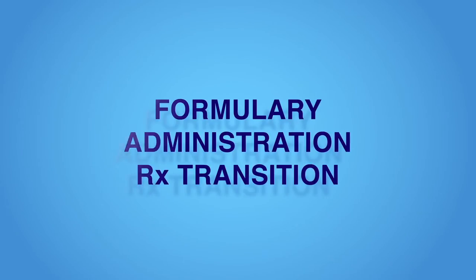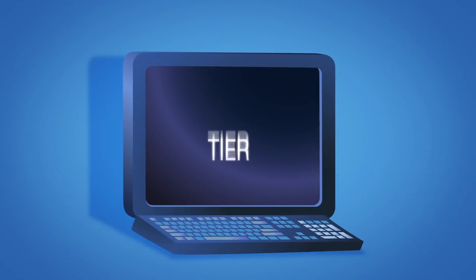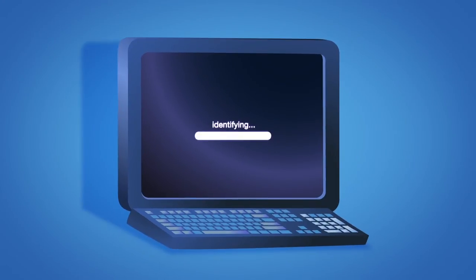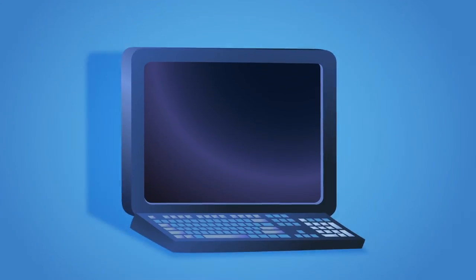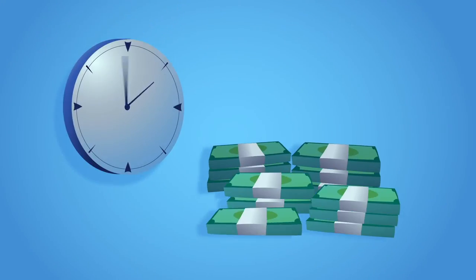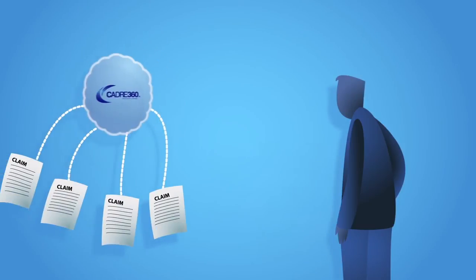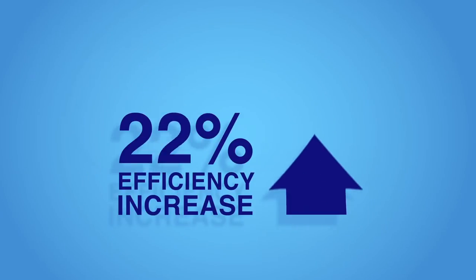The CADRE 360 Formulary Administration Rx Transition module compares every claim with the approved formulary drug index, tier, quantity limits, prior authorization, and step therapy. It systematically identifies both paid and rejected outlier claims that are inconsistent with CMS rules. This module makes the review process efficient and saves valuable resources by documenting pharmacy department actions and creating links to each affected claim for easy retrieval during an audit. Clients using this module report efficiency improvements of over 50%.